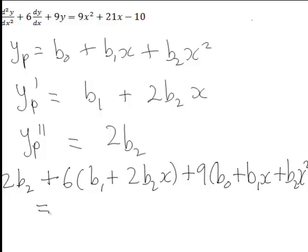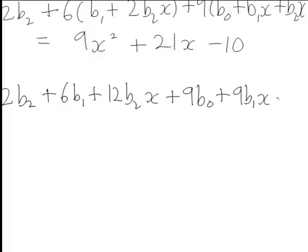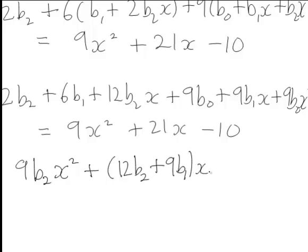That is all equal to the right hand side of our original DE, which is 9x squared plus 21x minus 10. Expanding the left hand side gives 2b2 plus 6b1 plus 12b2x plus 9b0 plus 9b1x plus 9b2x squared, all equal to 9x squared plus 21x minus 10. We now group like terms: 9b2x squared, then (12b2 plus 9b1)x, then the constants (6b1 plus 9b0 plus 2b2).